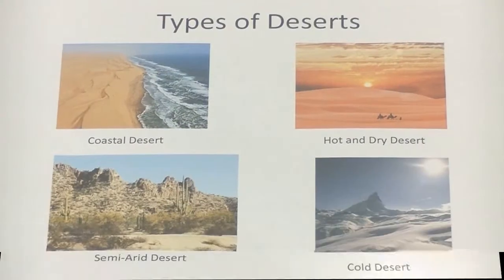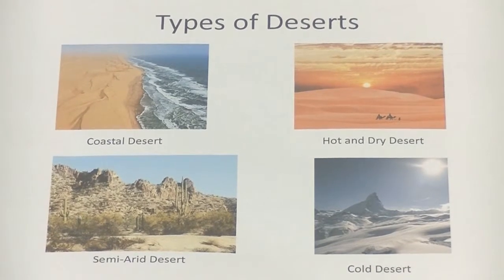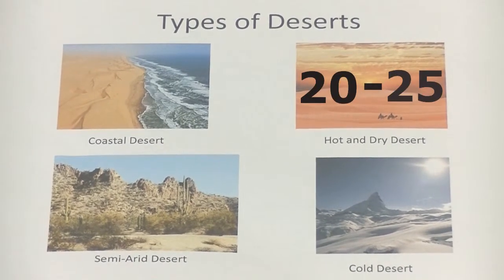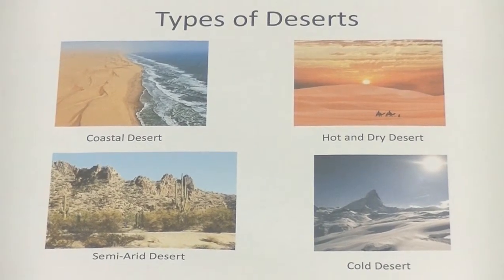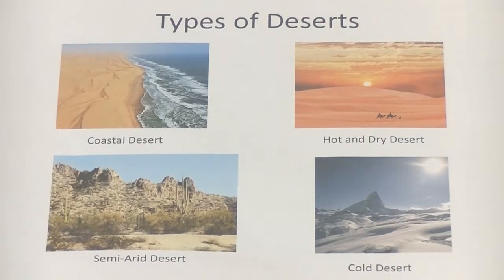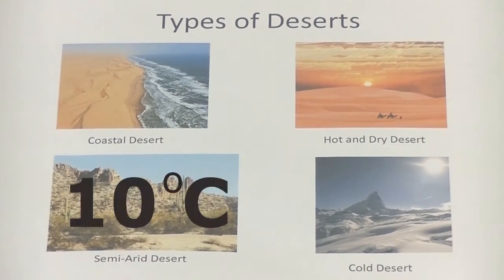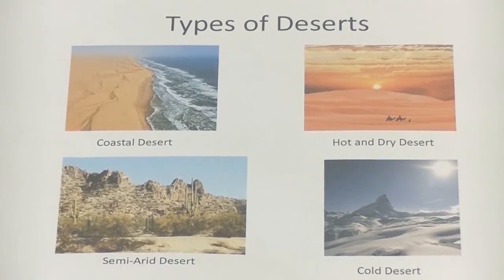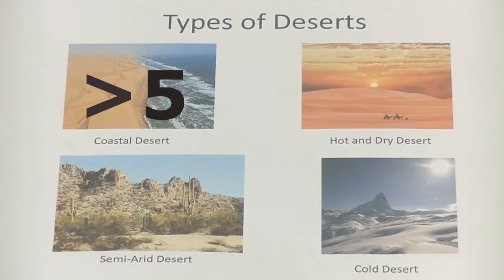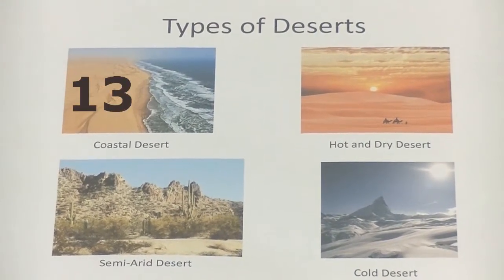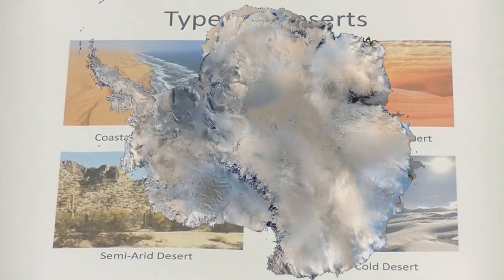There are many types of deserts around the world. Hot and dry deserts such as the Mojave in North America have 20 to 25 degrees Celsius temperatures all year with small plants and animals. Semi-arid deserts such as the Great Basin have summer temperatures of 21 to 27 degrees Celsius with nights of 10 degrees Celsius. Coastal deserts such as the Atacama in Chile have winter temperatures of less than 5 degrees Celsius and long warm summers between 13 and 24 degrees Celsius. Cold deserts such as the Antarctic have long cold winters.